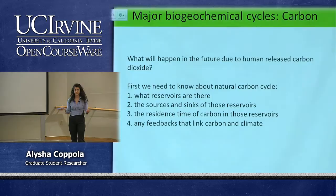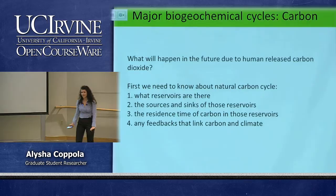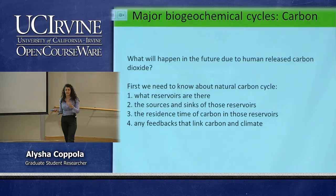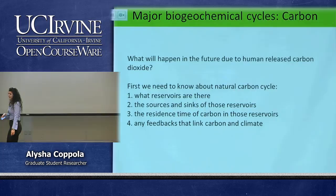One of the major things we're interested in is understanding what will happen in the future due to human influences that have definitely altered these cycles. First we need to understand the natural carbon cycle: we need to know what the reservoirs are — where carbon is stored — what the sources and sinks are in those reservoirs, the residence time of carbon in those reservoirs, and any feedbacks that link carbon to climate — whether positive or negative.